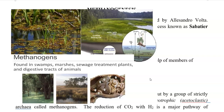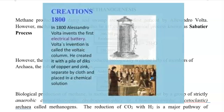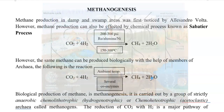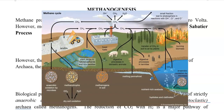It was first noticed by Alessandro Volta — the person who invented the voltaic cell or galvanic cell. Interestingly, this methane is produced by a biological process. In the top right-hand corner of this video, you can see a link to a Volta experiment conducted earlier. Just click that link to see how methane has been produced in the natural environment.